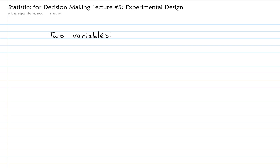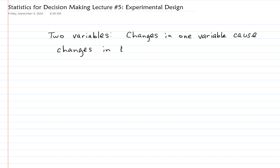You have the variable that you manipulate, and then you measure how much does that change the other variable. Changes in one variable cause changes in the other variable.